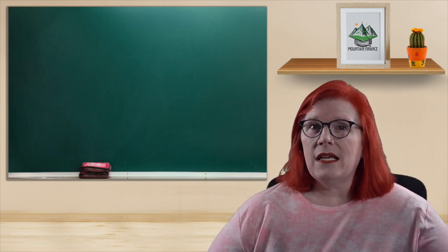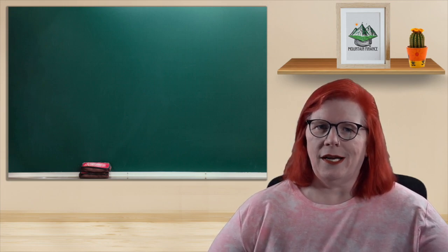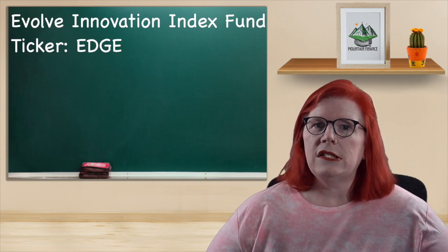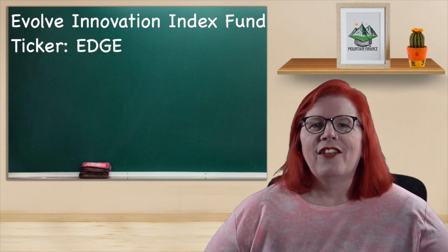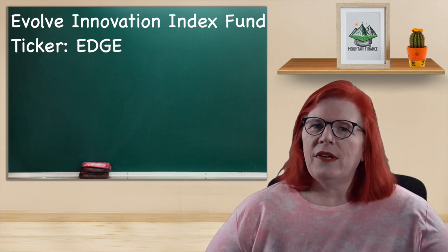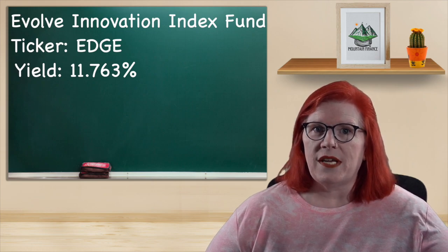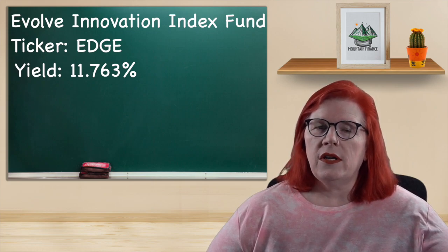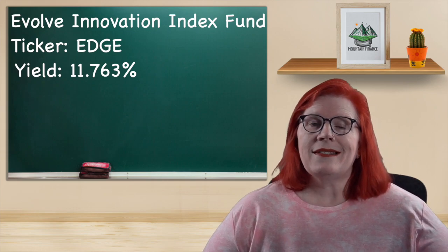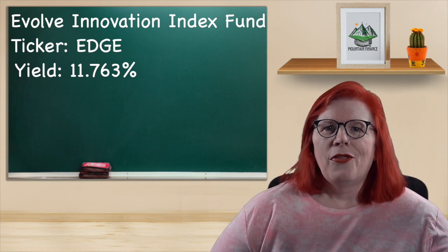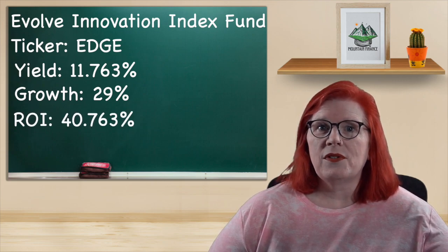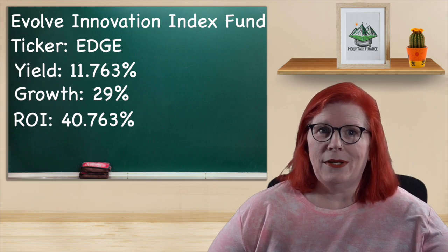Let's shift gears and look at some ETFs that satisfy our hybrid criteria. We will start with the Evolve Innovation Index Fund with a ticker of EDGE. They aim to replicate the performance of the Selective Global Innovation Index. Their dividend yield is 11.763 percent in the form of a quarterly dividend of $5.03 per share. Their growth for last year was 29 percent for a total ROI of 40.7 percent. Holy banana bread, that's not too shabby at all.